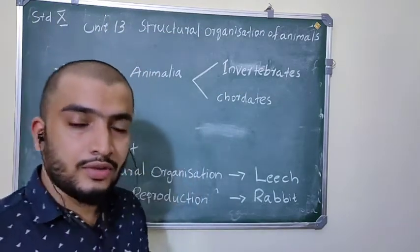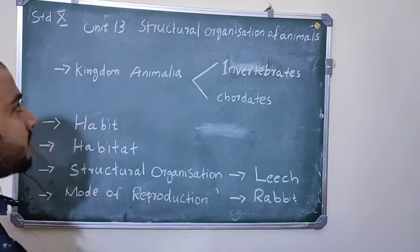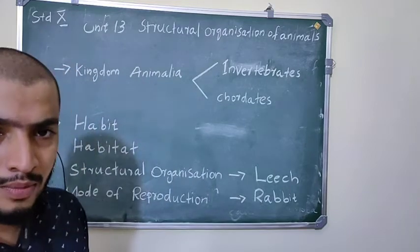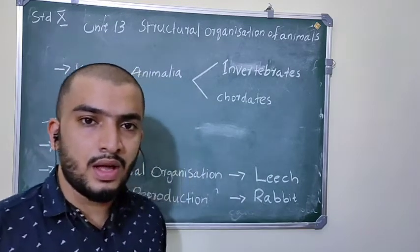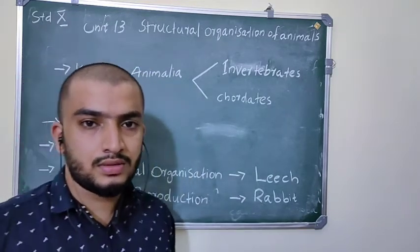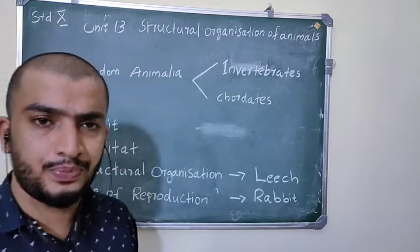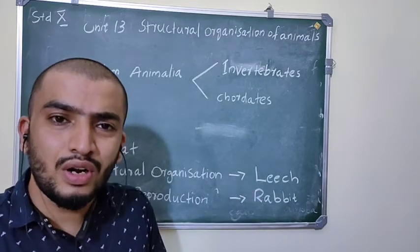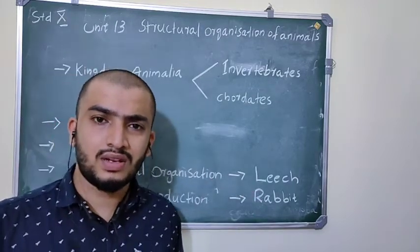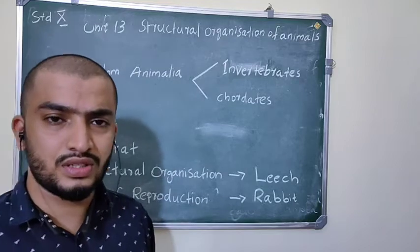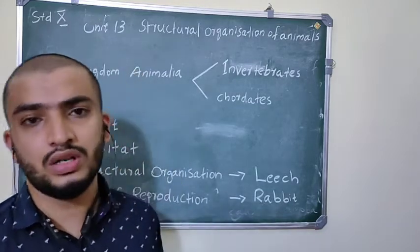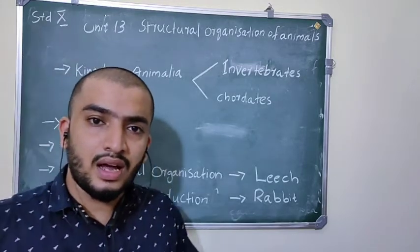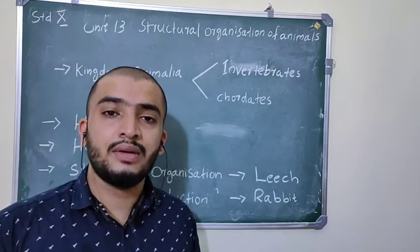Today we are going to take a new chapter: Structural Organization of Animals. We are going to discuss mainly about two animals — leech and rabbit. Animals are found around us; we see only a few, but there are so many species found in this world. All these animals come under the category Kingdom Animalia.